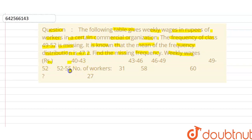It is known that the mean of the frequency distribution is 47.2. Then find the missing frequency. Weekly wages are given in rupees, number of workers are given. Now first we let the assumed mean that is equal to 47.5.